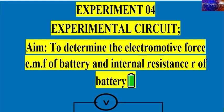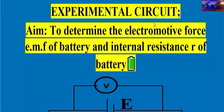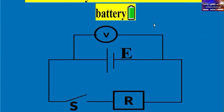The aim of experiment number four is to determine the electromotive force of a battery and the internal resistance of the cell or battery. We will use an experimental circuit that includes one cell, a voltmeter connected in parallel with the cell, a switch, and a resistance box.